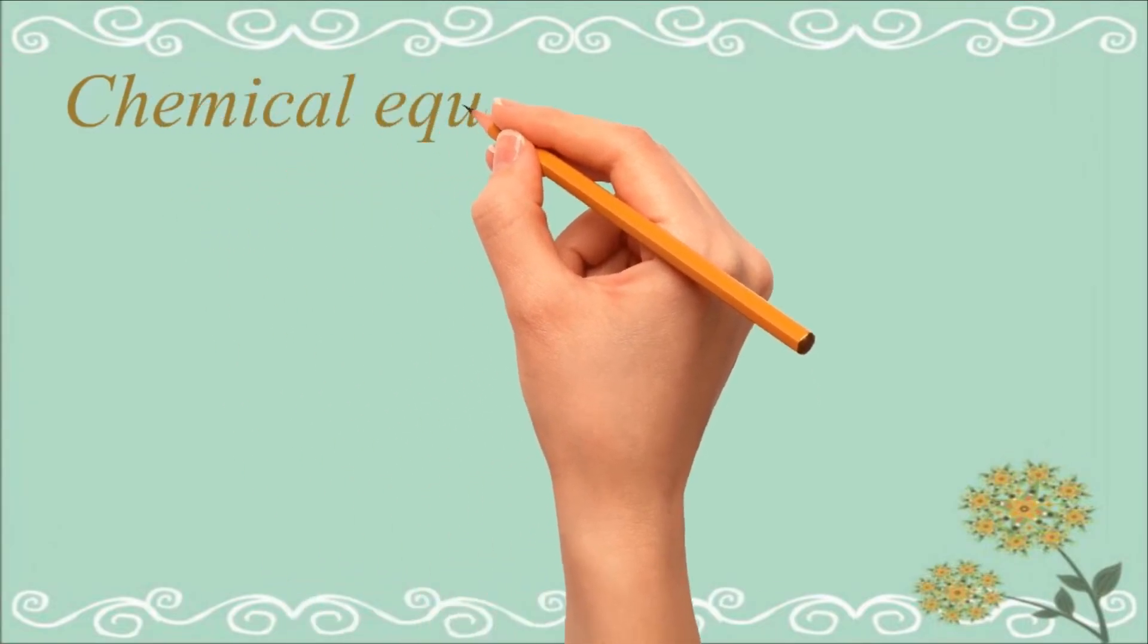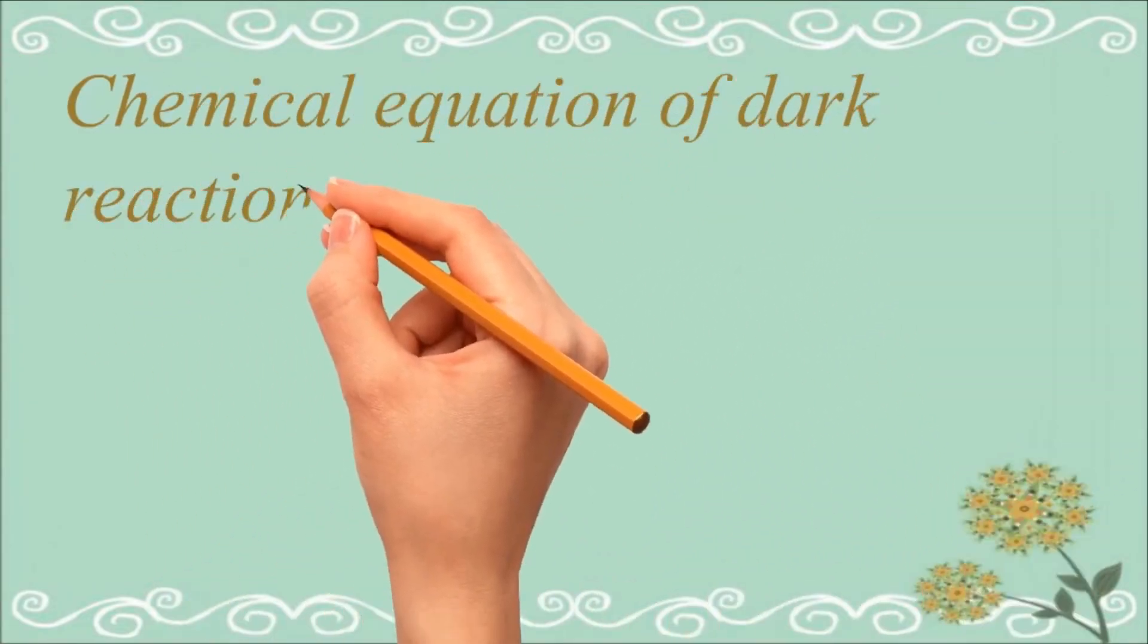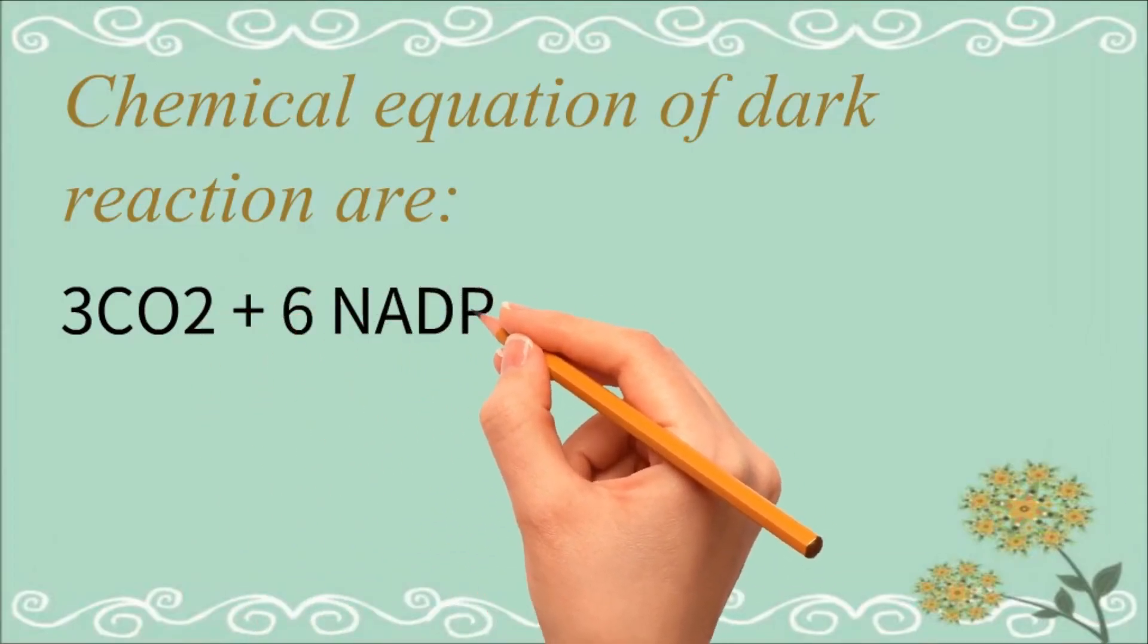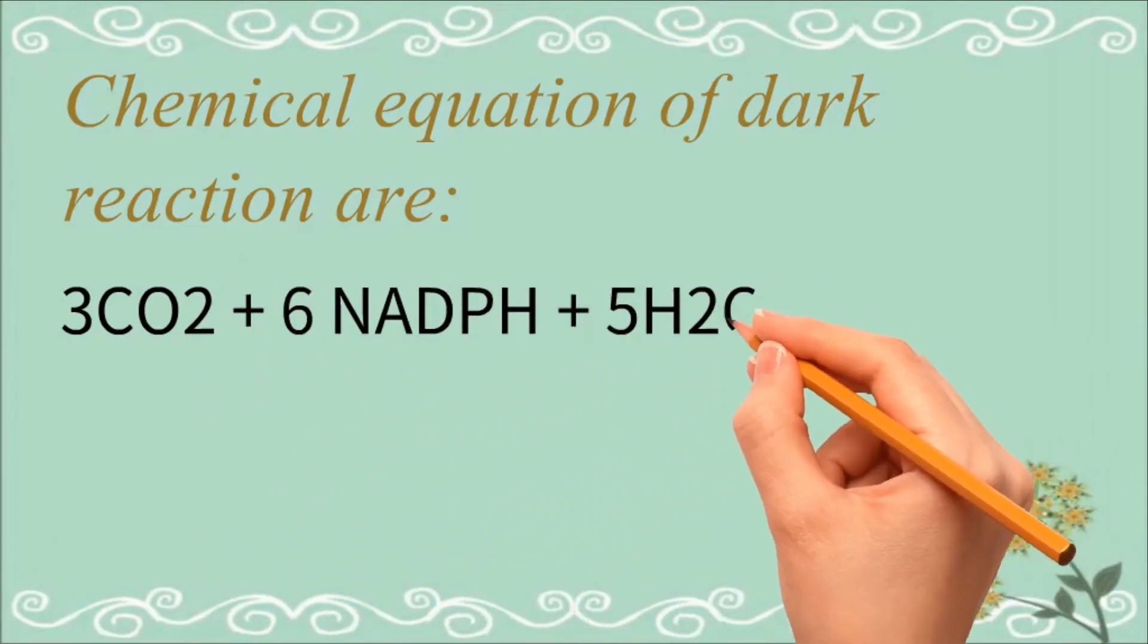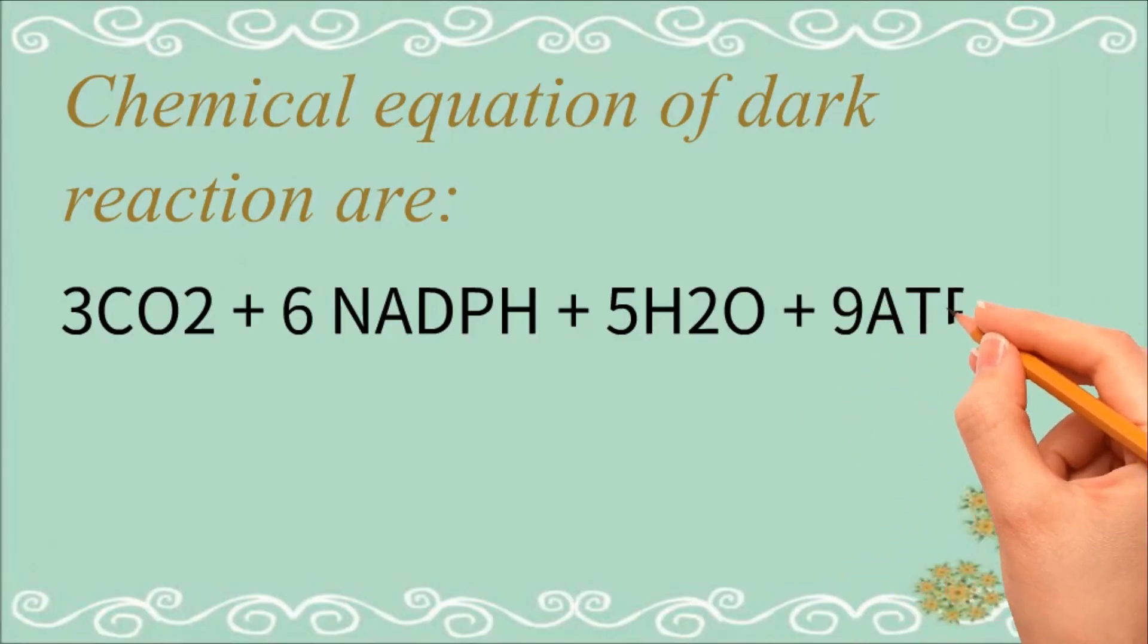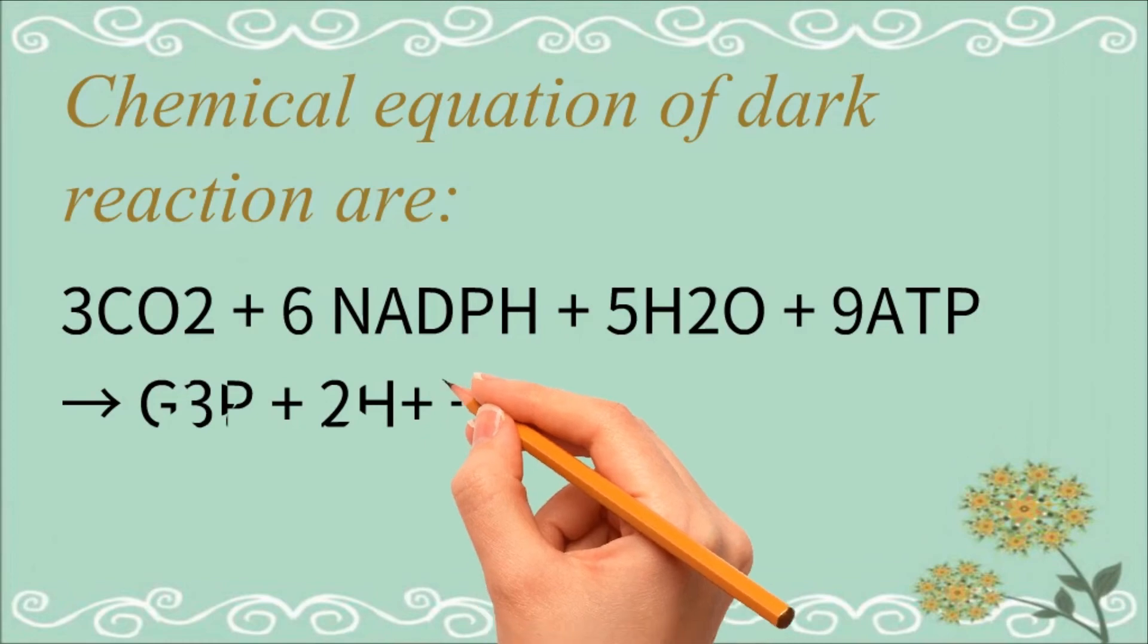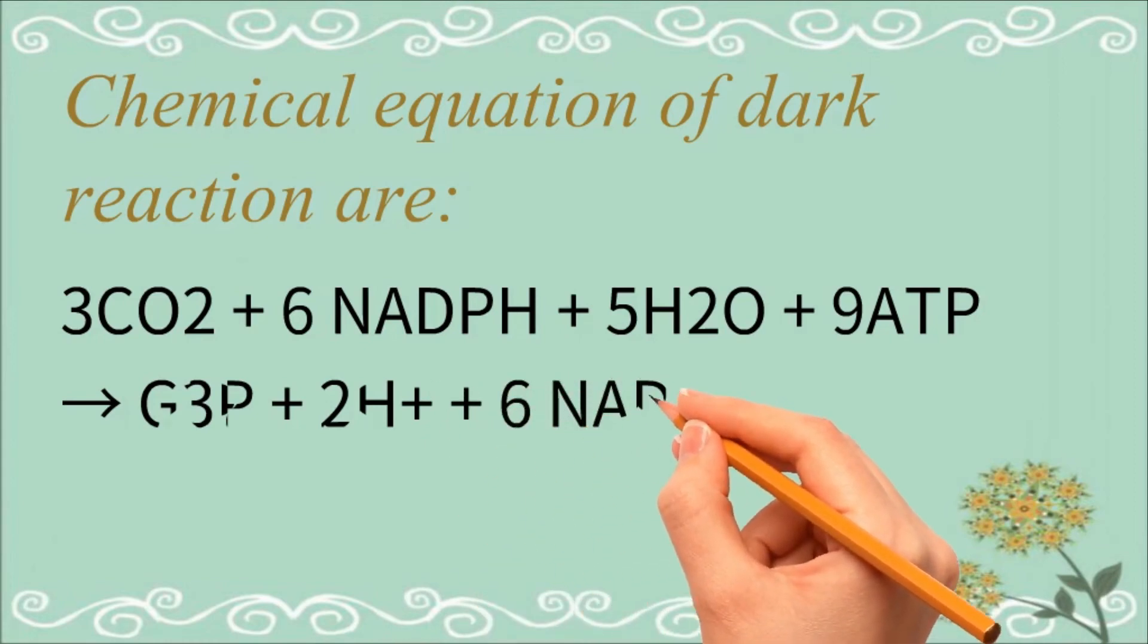The chemical equation for the dark reaction can be reduced to: three molecules of carbon dioxide, six molecules of NADPH, five molecules of water, and nine ATP molecules form glyceraldehyde 3-phosphate, two hydrogen ions, six NADP ions, nine ADP molecules, and eight phosphate ions.